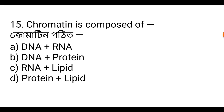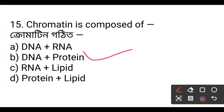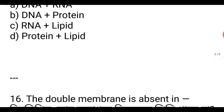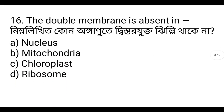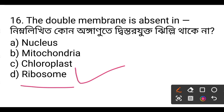Option number B is the answer for the first question. The double membrane is absent. Option number D is ribosome — in ribosome, there is no membrane.